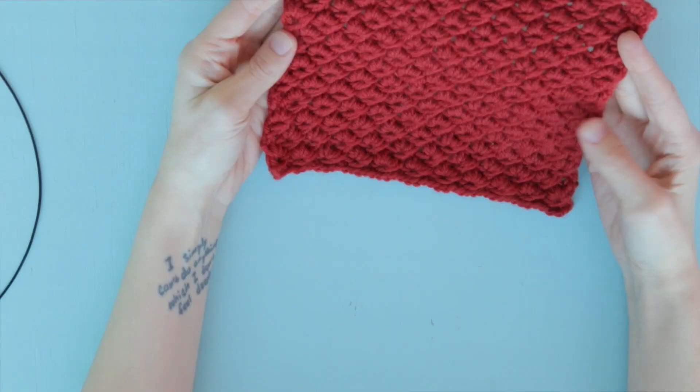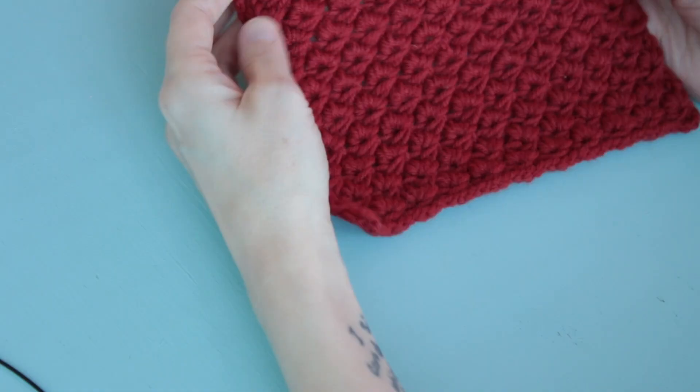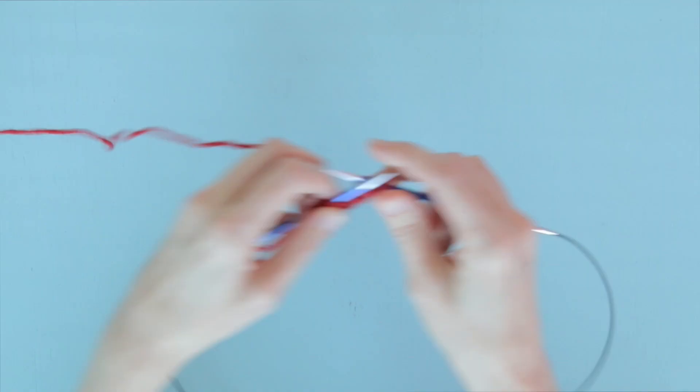So let's see how to do that knit four, purl four, knit four, purl four action one more time. We are working with the last four stitches on our needle with two wraps per stitch, so we need to get rid of those extra wraps first.